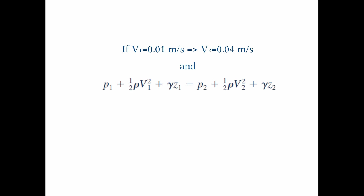Recalling the Bernoulli equation, we write P1 plus one-half rho V1 squared plus gamma z1 equals P2 plus one-half rho V2 squared plus gamma z2. Since the pipe is horizontal, gamma z1 and gamma z2 are equal and cancel out. P2 is given as atmospheric pressure, so if we use gauge pressure for calculations, that makes P2 equal to 0.